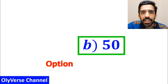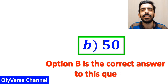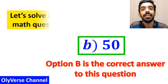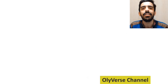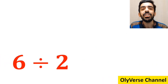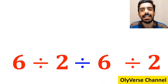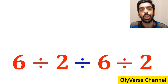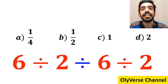Therefore, option B is the correct answer to this question. Now let's solve another tricky math question together. What is the value of the expression 6 divided by 2, and again divided by 6 divided by 2? Which option do you think is the correct answer to this question?